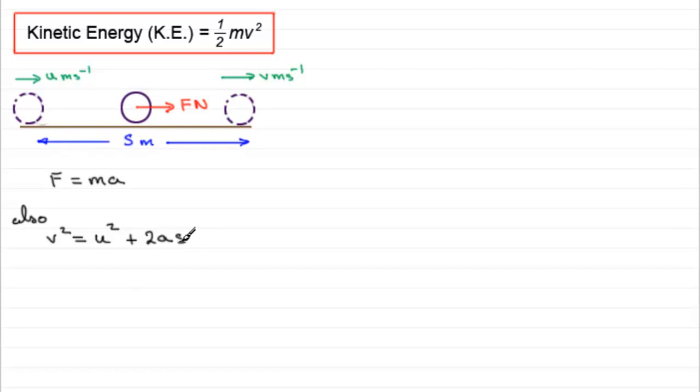Now if we were to rearrange this equation to make a the subject by taking u squared from both sides and dividing by 2s, we would therefore end up with a equals v squared minus u squared all divided by 2s.